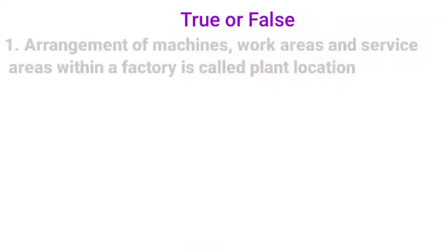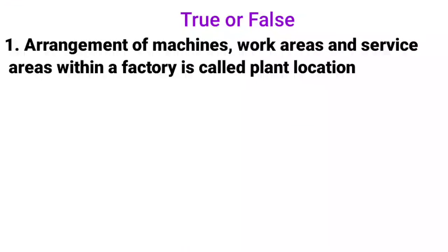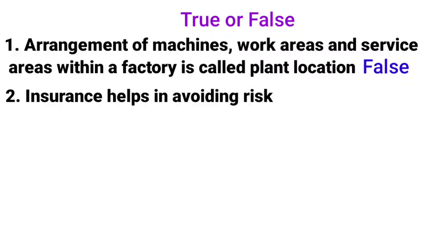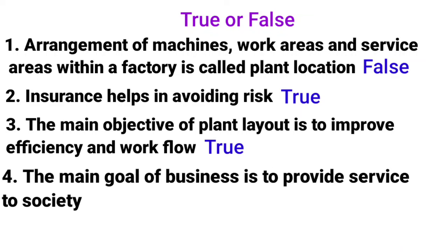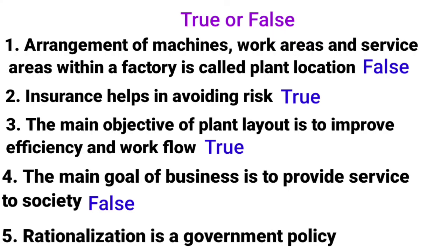True or false: First — 'The arrangement of machines, work areas and service areas within a factory is called plant location' — this is false; that definition is plant layout, not plant location. Second — 'The main goal of business is to provide service to the society' — false; the main goal is to earn profits. Third — 'Insurance helps in avoiding risk' — true. Fourth — 'The main objective of plant layout is to improve efficiency and workflow' — true. Fifth — 'Rationalization is a government policy' — false; nationalization is a government policy, not rationalization.